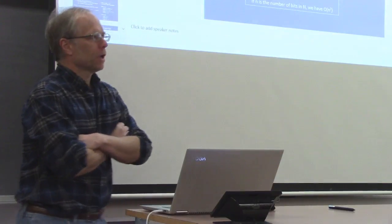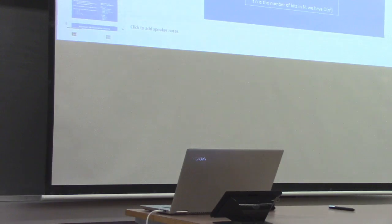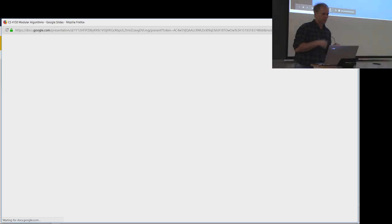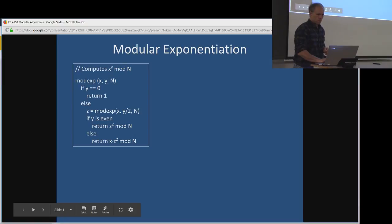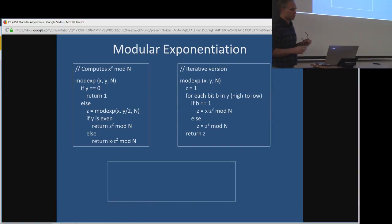We're going to continue talking about number theory algorithms because we're trying to build up to public key encryption. I want to remind you what we've looked at. We've been talking about modular arithmetic and we've looked at several algorithms. One was modular exponentiation — that's just the problem of computing x to the y mod n.